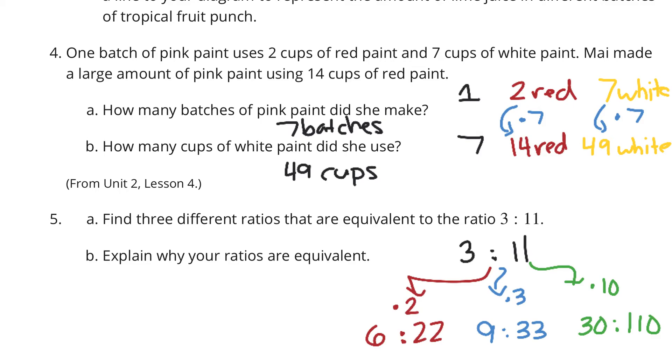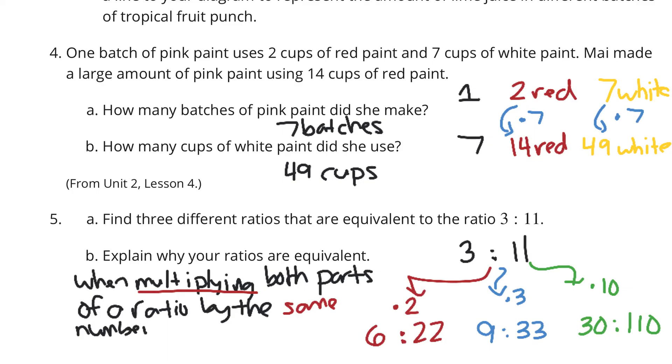To answer the question, explain why your ratios are equivalent, when multiplying, and the key word here is multiplying, both parts of a ratio by the same number, the ratios are still equivalent.